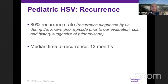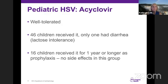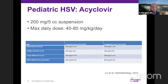Recurrence was high in this population — over 80% over the course of the study — occurring at approximately 13 months. Treatment was with oral acyclovir suspension for young children and pills as children were old enough. Stromal disease and iritis were treated with steroids according to the clinical course. In general, acyclovir was well tolerated. The majority of children received it, and only one had GI upset in the setting of pre-existing lactose intolerance. Sixteen children used it for one year or longer with no side effects. We dose by half teaspoons and adjust according to the child's weight — there is a wide safety margin for acyclovir.